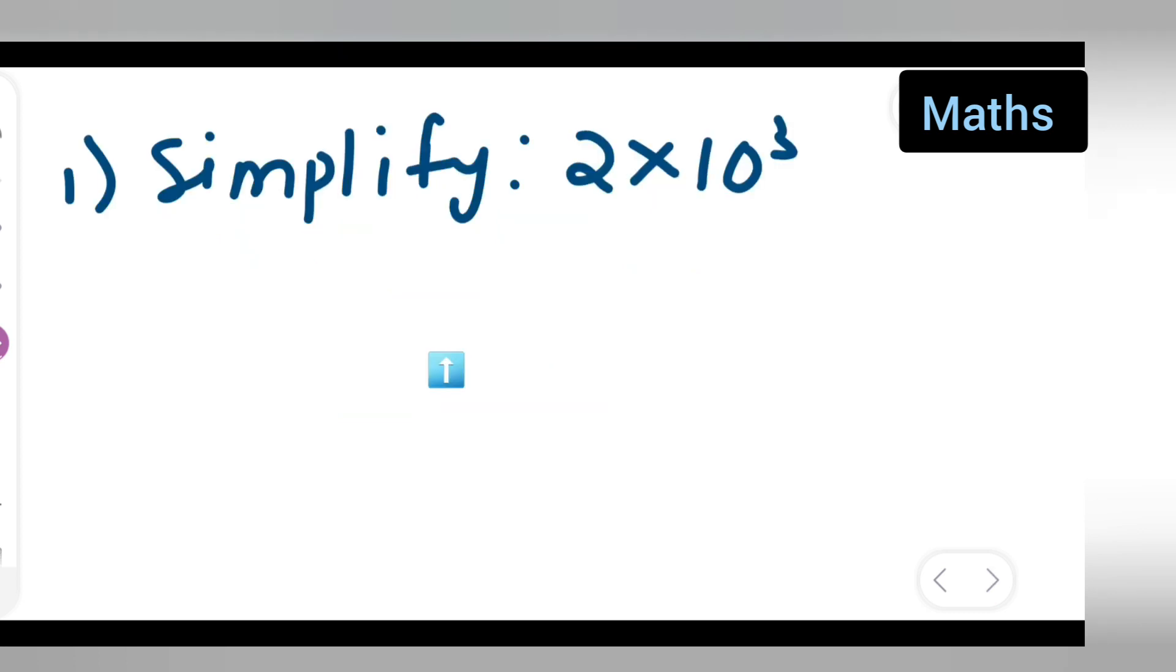First, y'all can take down the question: simplify 2 multiplied by 10 raised to the power of 3. Now let us see how to simplify this. Let me start writing. First, write down 2 multiplied by 10 raised to the power of 3. Now this is equal to 2 multiplied by...